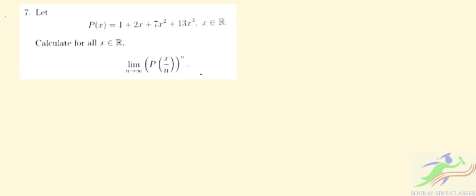Hello students, welcome to short of sir classes. This is from ISI B.Stat 2022 paper. Question number seven says: Let P(x) = 1 + 2x + 7x² + 13x³ where x belongs to R.